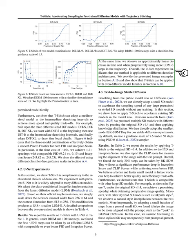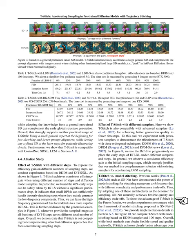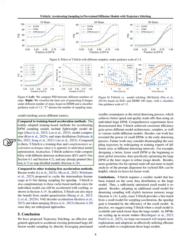In our ablation study, we investigate the impact of T-Stitch with different steps and samplers. We find consistent efficiency gains across various settings, indicating that smaller diffusion models, DPMs, are capable of handling the initial denoising steps effectively. This allows us to reserve the generation of fine details for more capable models. Our experiments also show that T-Stitch is compatible with advanced samplers, further enhancing generation quality in fewer time steps. Comparing T-Stitch with model stitching, we find that T-Stitch offers a clear advantage in achieving flexible speed and quality trade-offs without the need for training, making it a complementary technique to existing acceleration methods including lightweight model design, model compression, and step distillation.